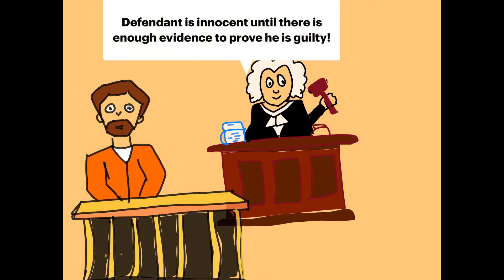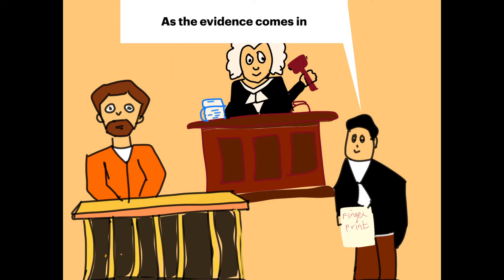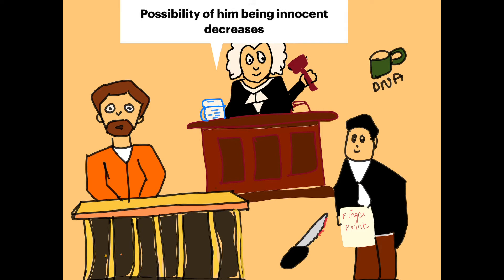As the evidence comes in - the fingerprint, the knife, the DNA sample against him - the possibility of him being innocent decreases. He is finally declared guilty. If you understood the story, you have understood the concept behind p-value and hypothesis testing.